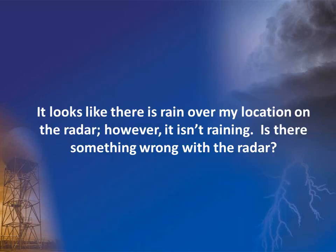So here's a question we frequently get asked. It looks like there's rain over my location on the radar. However, it isn't raining. Is there something wrong with the radar? Generally speaking, the answer to this question is no, there's in fact not anything wrong with the radar. But let's take a closer look at what's actually going on.